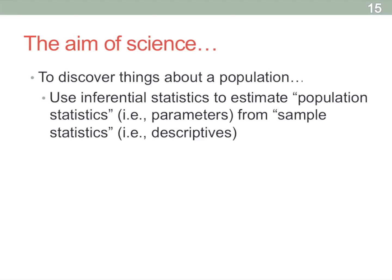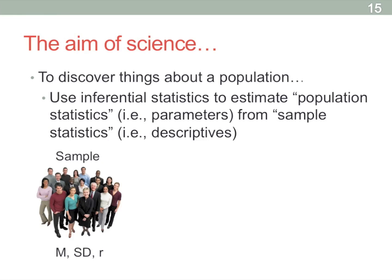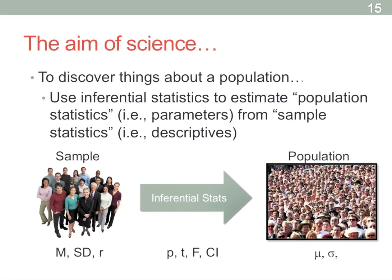So as an overview of what we do in science, especially psychology: we try to discover something about the population by drawing a sample from it. We draw a sample, get things like their mean, standard deviation, and relationships between variables. Then we use inferential statistics like significance tests or confidence intervals to infer whether or not that's also true in the population. We use those statistics to make our best, most educated guess as to what's really going on, always with some level of confidence.